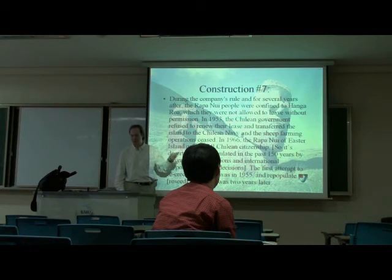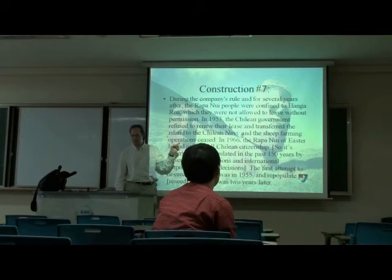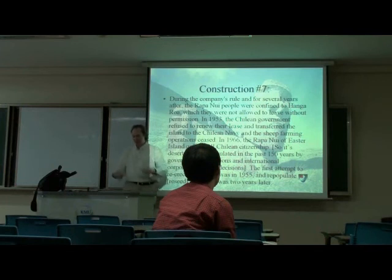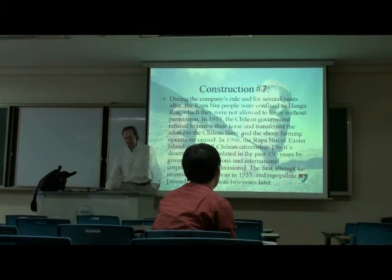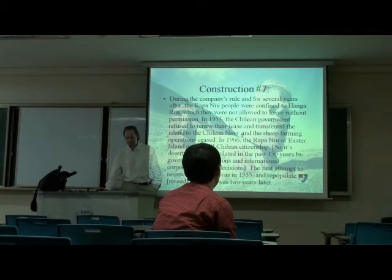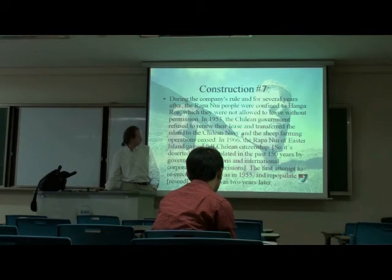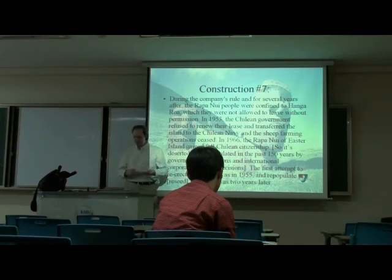During the company's rule, and for several years after, the Rapa Nui people were confined to Angaroa and could not leave without permission. They were essentially trapped in the volcano area by capitalist rules. In 1953, the Chilean government refused to renew the lease and transferred the island to the Chilean Navy, and the sheep farming operations ceased. In 1966, the Rapa Nui of Easter Island gained full citizenship. So the island was deserted and depopulated only in the past 150 years by governmental and international corporate landlord decisions — not by population problems, not exclusively by rats.